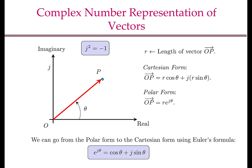A vector in 2D, or the position vector of a point in the plane, can also be represented using complex numbers. Let P be our point, shown by the blue dot here. OP is the position vector of point P, and r is the length of OP, or the distance of P from the origin. Using imaginary numbers, the Cartesian form of the vector of P is r cos θ plus j times r sin θ, where r cos θ is the x component or the real component, and r sin θ is the y component or the imaginary component. The polar form of this vector is r e to the power of jθ. This polar form may be new to many of you, but it will be of importance to us for doing position, velocity, and acceleration analysis.